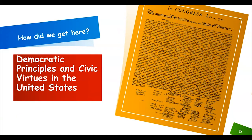The United States was founded as one of the first free democracies in the modern world. After the American Revolutionary War, American colonists — now free and united citizens — had to establish a new government. The citizens passed the Articles of Confederation, which failed in just a few years because they were inherently flawed.